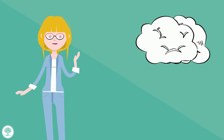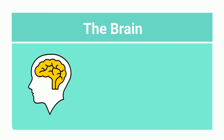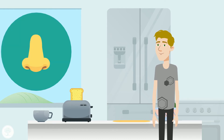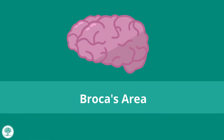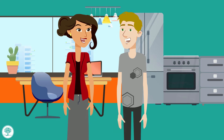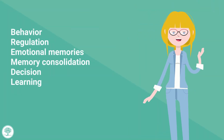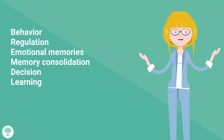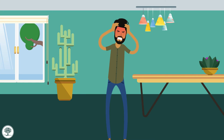Let's look at the brain. There are three parts of the brain generally associated with the stress response: the amygdala, the hippocampus, and the prefrontal cortex. The amygdala has a close association with the olfactory cortex — the way we process smell — and that becomes relevant in our experience of trauma. In the prefrontal cortex there is also Broca's area, associated with language, which also becomes relevant as we talk about experiences with trauma. Behavior regulation, emotional memories, memory consolidation, decision-making, and learning all come into play as we react to trauma.